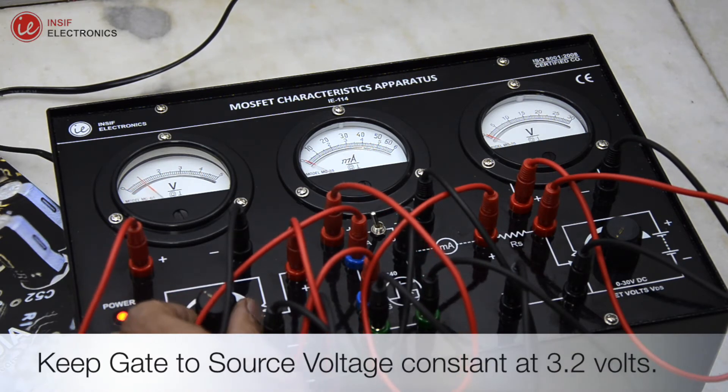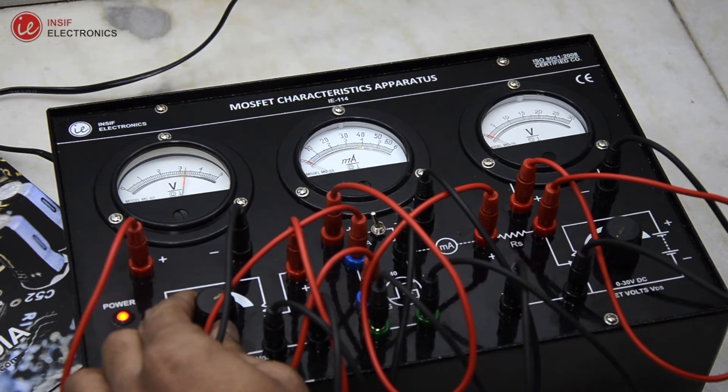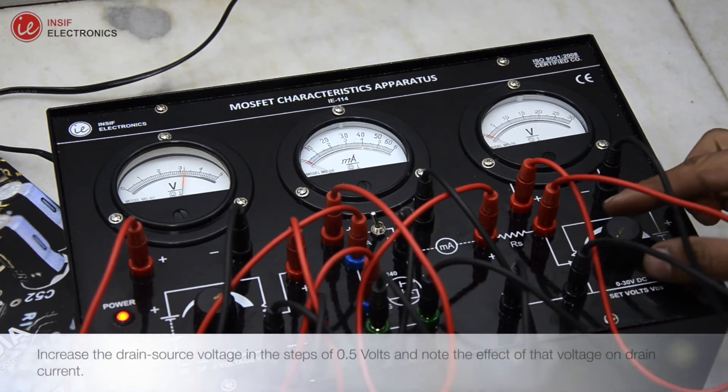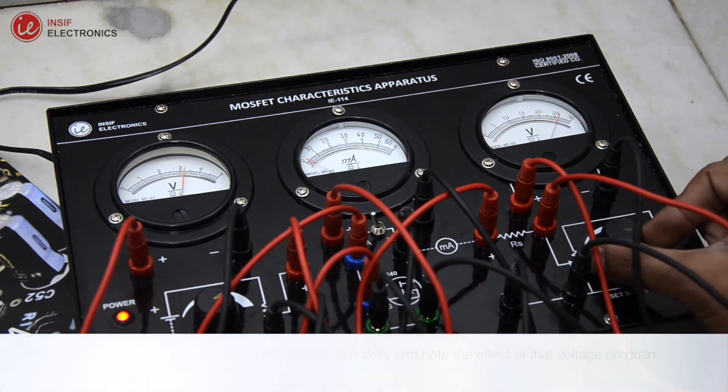Keep gate to source voltage constant at 3.2 volts. Increase the drain source voltage in steps of 0.5 volts and note the effect of that voltage on drain current.